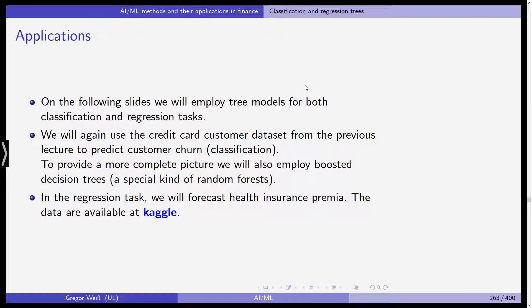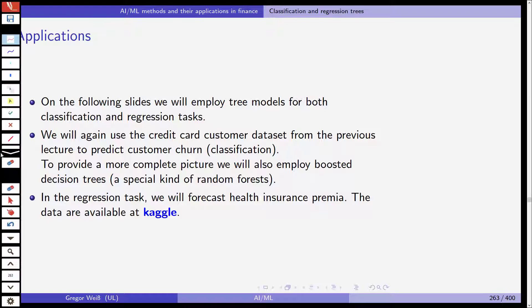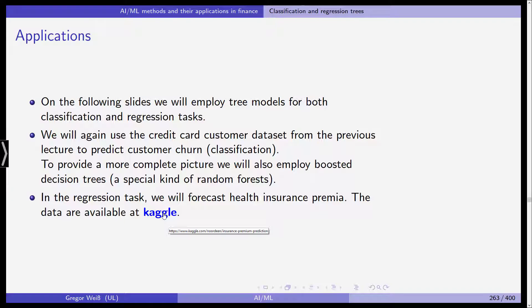In the regression task later on we will forecast health insurance premium. In this case we have a metric response variable in contrast to the binary one in the previous customer churn example where it's only about termination or no termination, and both data samples are available at Kaggle.